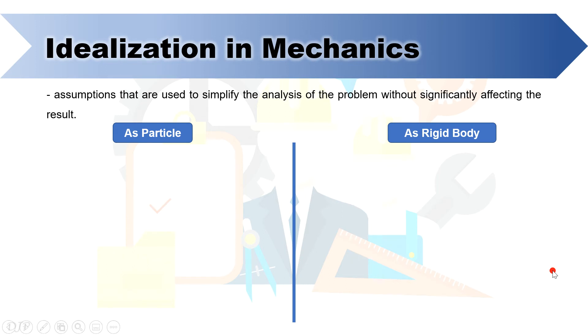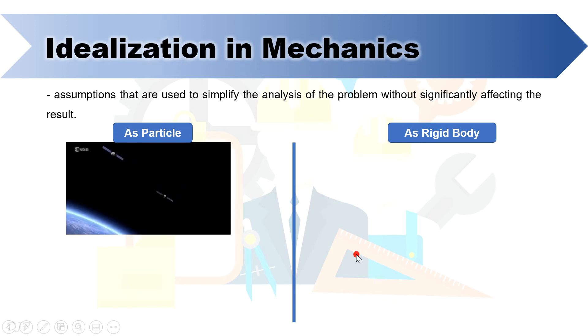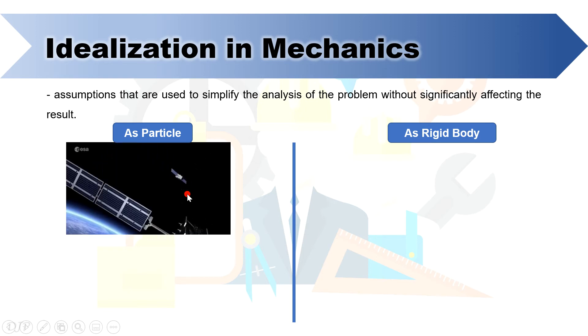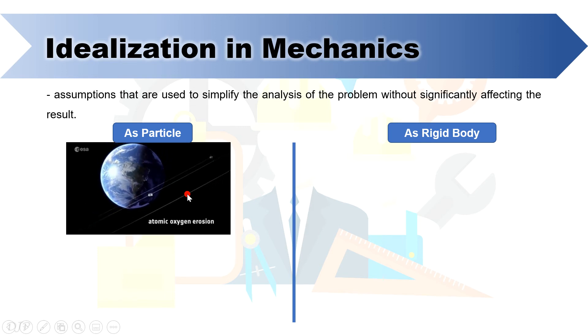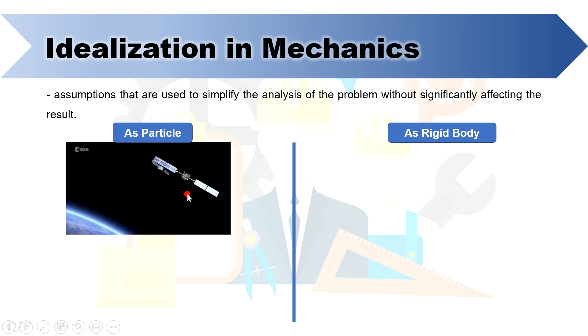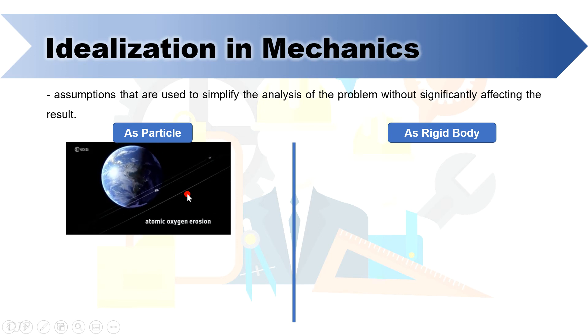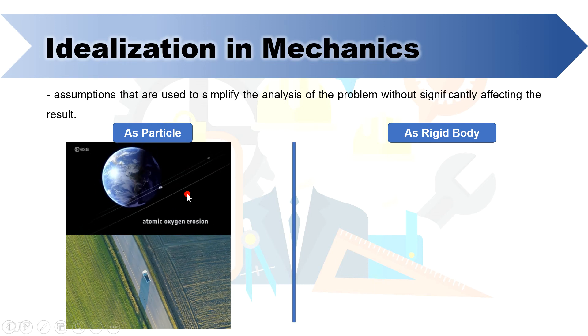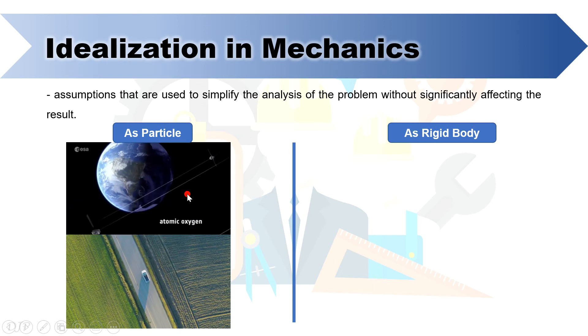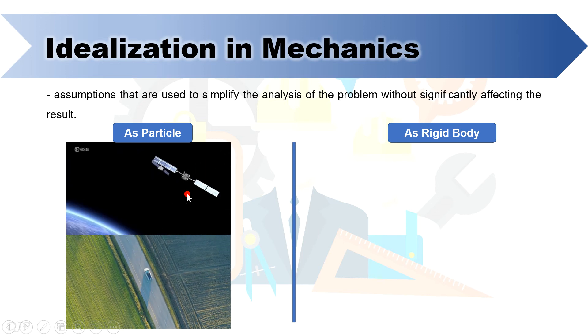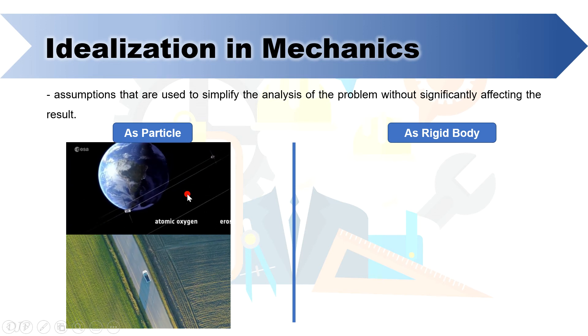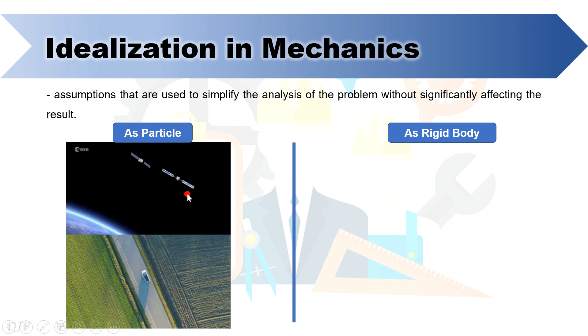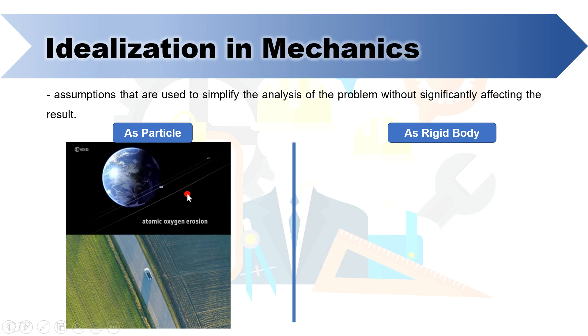Considering a particle can be relative, let's refer on this figure because here the satellite can be analyzed as particle to investigate its motion because relatively the size of the satellite is negligible compared to our planet. Another example is a vehicle traveling from one point to another. Here the vehicle can be analyzed as particle if the distance that it will travel is too large, maybe a few kilometers or more compared to its size.